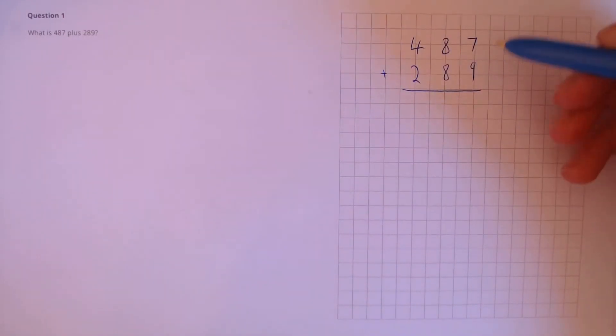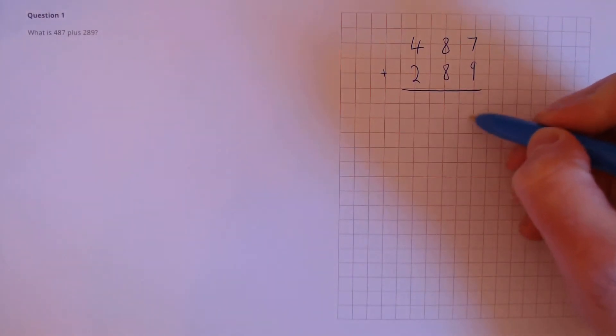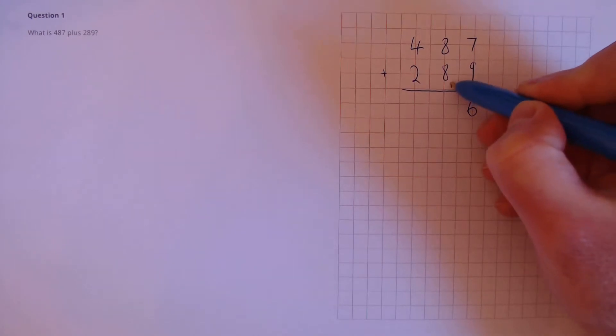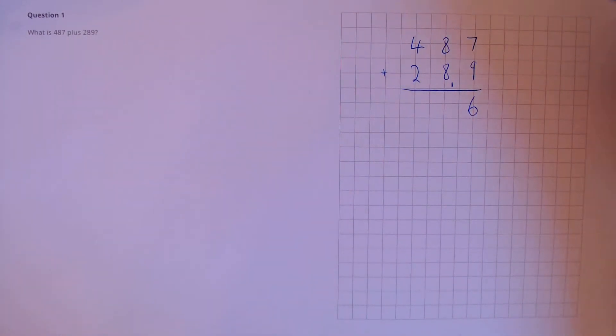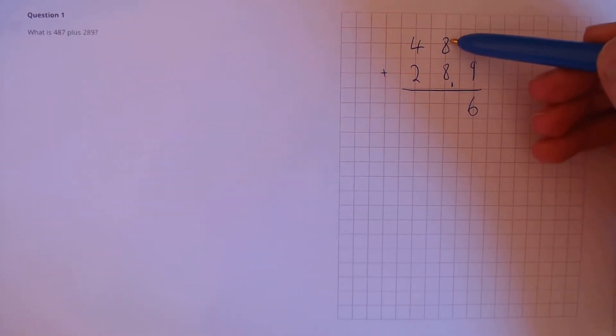First we look to the units column. 9 plus 7, that's 16. Since that's too big to go in a single digit, we need to put the 6 there and carry over the 1 into the tens column. Now let's do 8 plus 8 plus the 1. So 8 plus 8 is 16, plus 1 is 17.